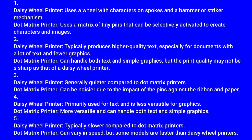A daisy wheel printer is generally quieter compared to dot matrix printers. Dot matrix printers can be noisier due to the impact of pins against the ribbon and paper. The daisy wheel is primarily used for text and is less versatile for graphics, while the dot matrix is more versatile. The daisy wheel is typically slower, though some dot matrix models are faster.